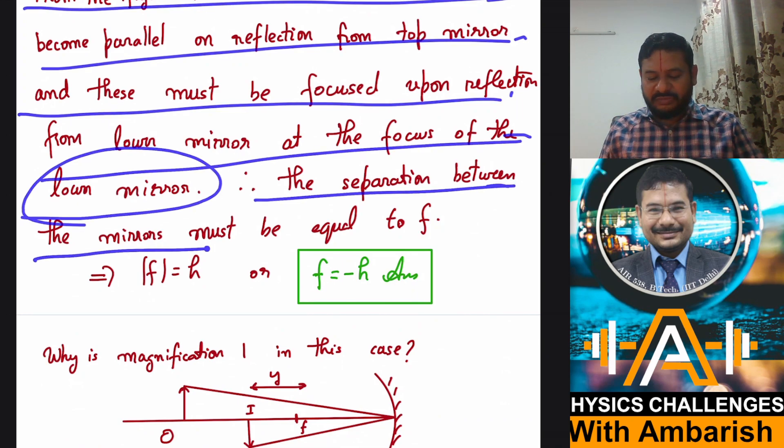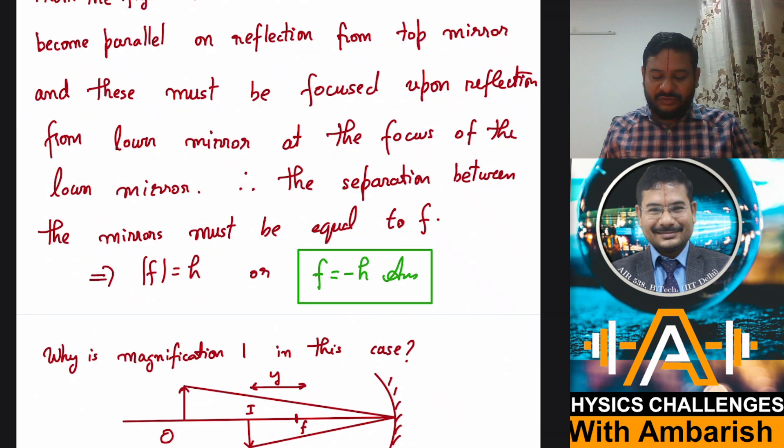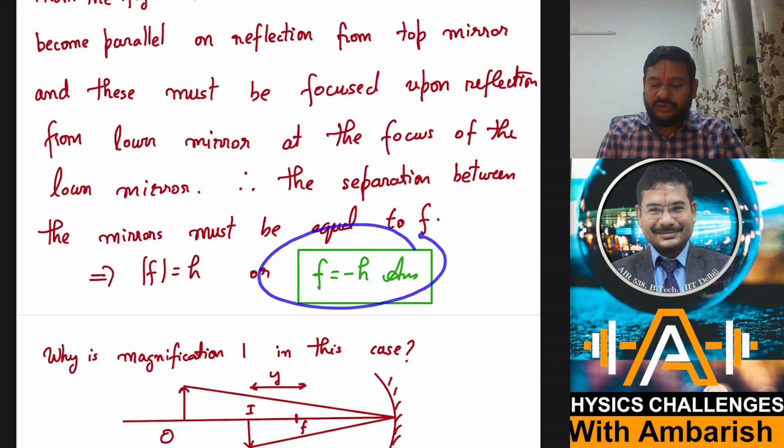And these must be focused upon reflection from the lower mirror at the focus of the lower mirror. So separation between the mirrors must be equal to F. And therefore focal length, if you want the sign value, it becomes minus H. Otherwise, if you just want the magnitude, the focal length magnitude is H.